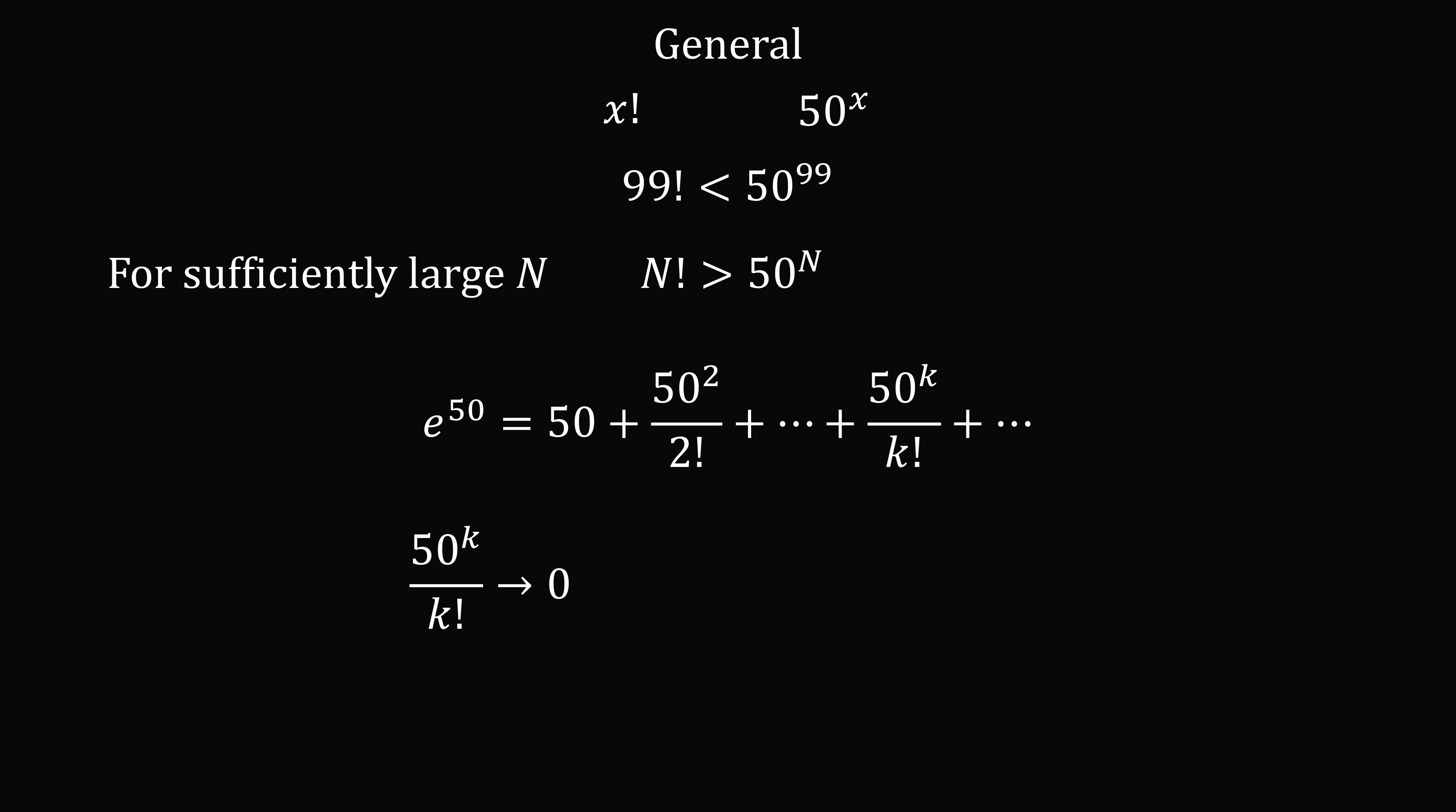the terms will have to tend towards 0. 50 to the power of k divided by k factorial will have to tend towards 0. So for some sufficiently large value of n, we will have 50 to the power of n divided by n factorial is less than 1, which means 50 to the power of n will eventually be less than n factorial.